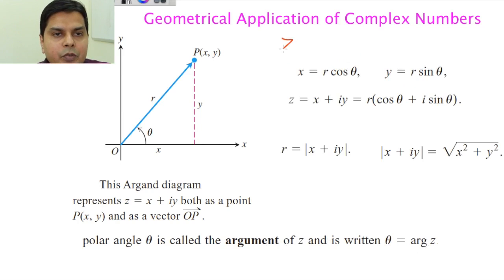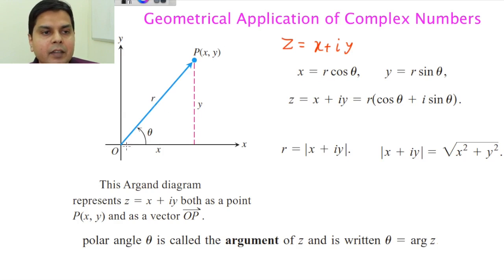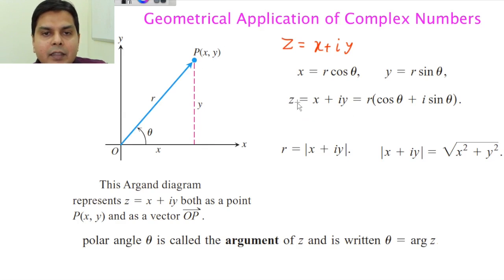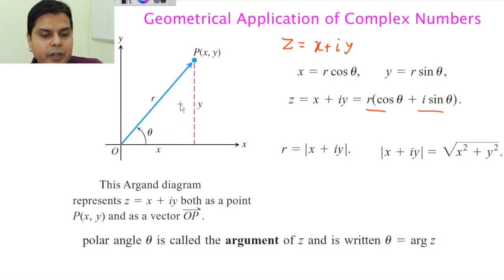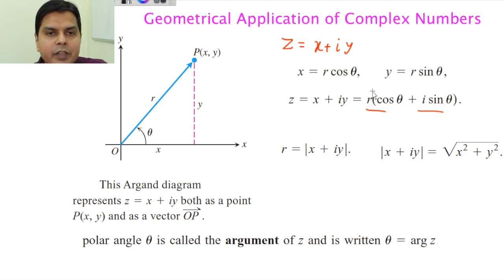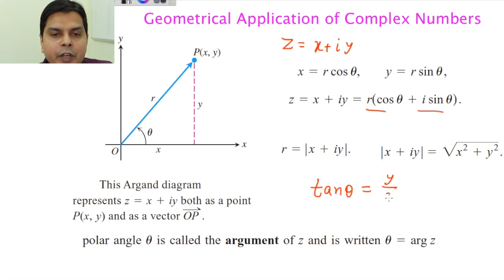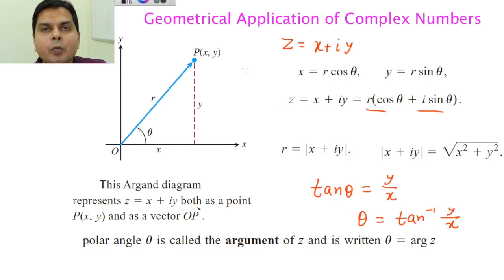When z = x + iy is written in polar form in terms of r and θ, then x = r·cosθ and y = r·sinθ, so z = r(cosθ + i·sinθ). The magnitude r = |x + iy| = √(x² + y²) by Pythagoras' theorem. Since y = r·sinθ and x = r·cosθ, dividing gives tanθ = y/x, so θ = arctan(y/x), which is the argument of the complex number.